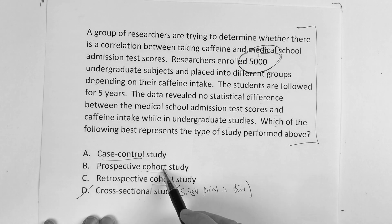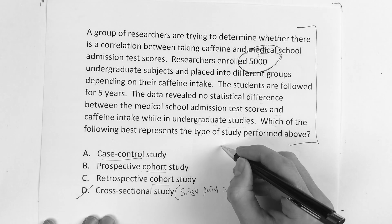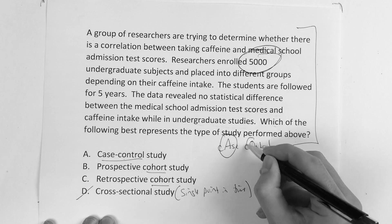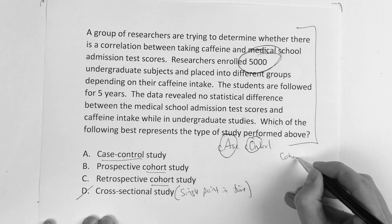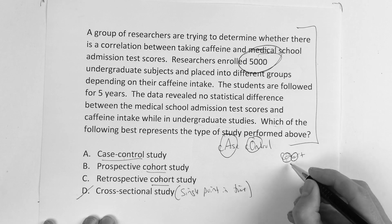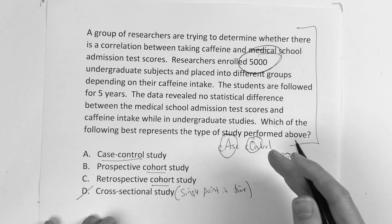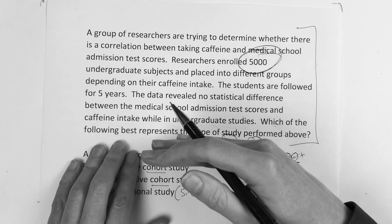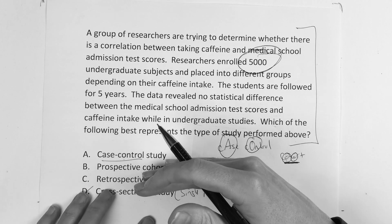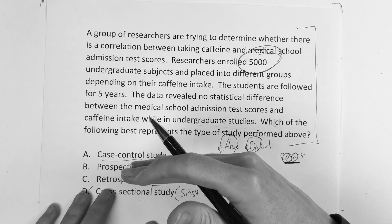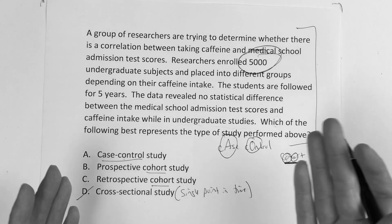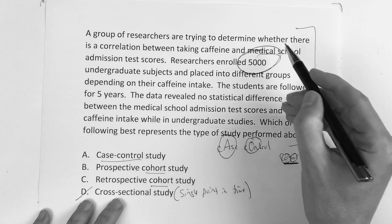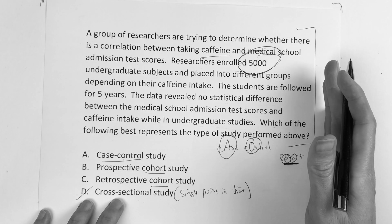The key to this is case control versus cohort. Remember, case control - one group has it, one group does not. A cohort, they both look the same. So in the beginning, nobody has the disease in a cohort. So then you have to ask yourself, in this research, did anybody have the condition? Was anybody in medical school at the beginning of this study? Because that's essentially what they're asking - is there a correlation between the caffeine and medical school? They could have been asking is there a difference between smoking and cancer. And so if at the beginning of the study, nobody had cancer, just like in this one nobody's in medical school, then this is going to be a type of cohort study.